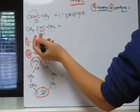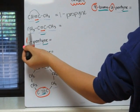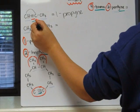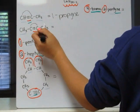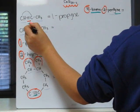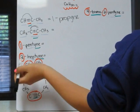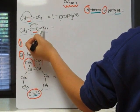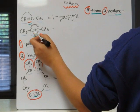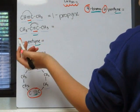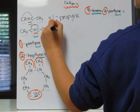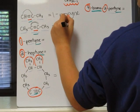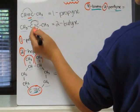Our second example: if we count from the left hand side, it's on the second carbon to the third. Or if we count from the right, it's also on the second carbon to the third. So it doesn't matter what side we go from. In total, we have four carbons and our triple bond is on the second carbon. So it would be two for the bond being on the second carbon, bute for four carbons, and yne for the triple bond.